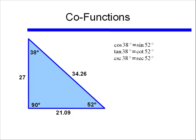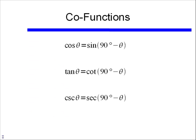What's the relationship between 38 degrees and 52 degrees? They are complements of each other — 52 degrees equals 90 degrees minus 38 degrees. So cosine of an angle equals the sine of 90 degrees minus that same angle. Likewise, tangent of 38 degrees equals the cotangent of the complement of 38 degrees, and cosecant of 38 degrees equals the secant of the complement of 38 degrees.